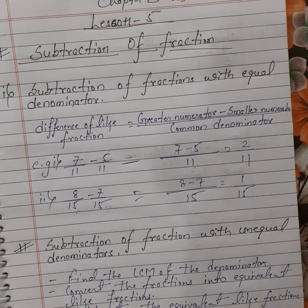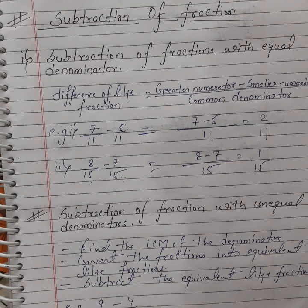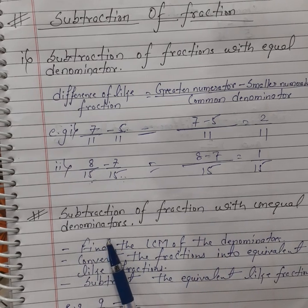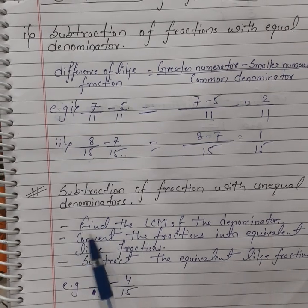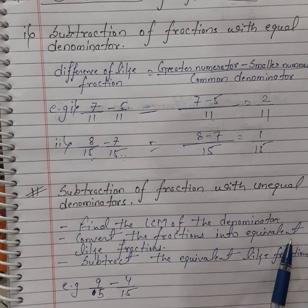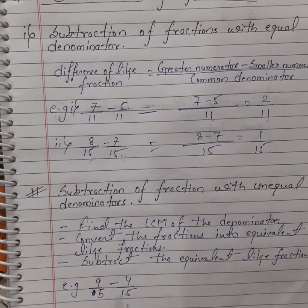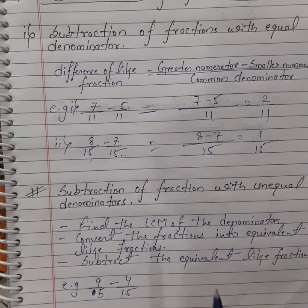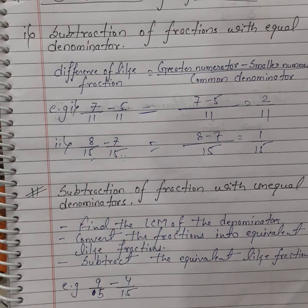You just subtract the numerators and divide by the common denominator. Second, we learn how to subtract unlike fractions — subtraction of fractions with unequal denominators. First, find the LCM of the denominators. Convert the fractions into equivalent like fractions, then subtract them. Subtraction is the inverse operation of addition, so we just follow the same steps we used in addition.